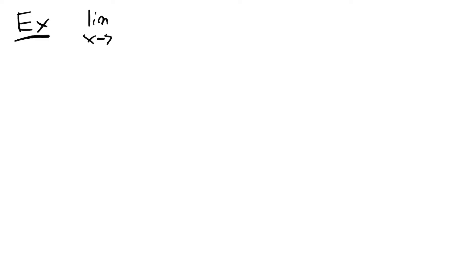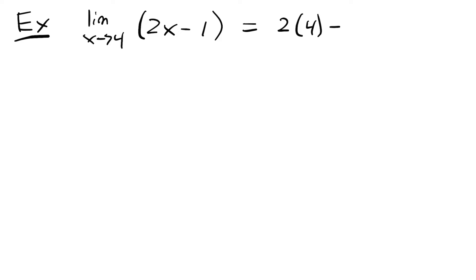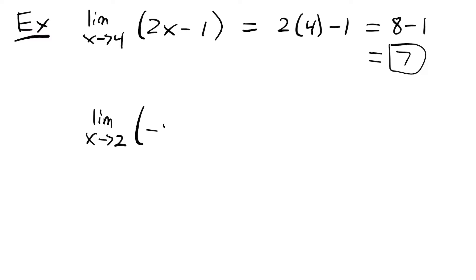Now we'll look at some examples that are a little more involved. We'll start with the limit as x approaches 4 of 2x minus 1. We can just plug in our value of 4, so we'll have 2 times 4 minus 1, which equals 8 minus 1, which equals 7. Then we'll look at the limit as x approaches 2 for the function negative x squared plus 4.